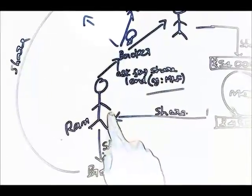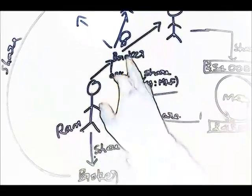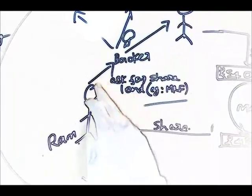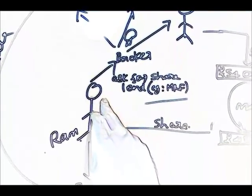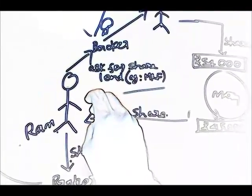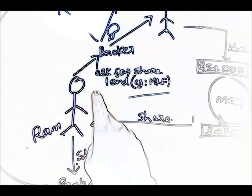Suppose Ram asks for shares lent from the broker. So what the broker does is, Ram knows the share of MR company is going to get down the next day, so he asks for lending the share.